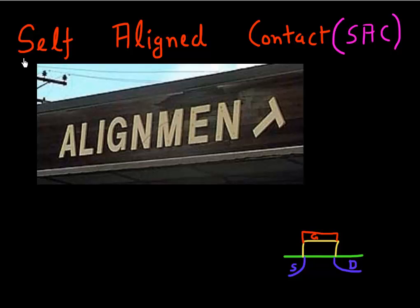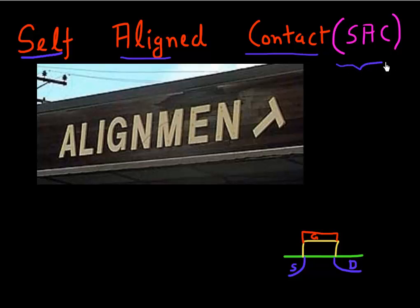Hello folks. In this video I want to talk about self-aligned contacts, also called SAC — because who doesn't like three-letter acronyms? What they are, why we need them, how we make them, and what their implications are on our devices. Self-aligned contact means that my contact to the source and drain is now self-aligned to my gate.